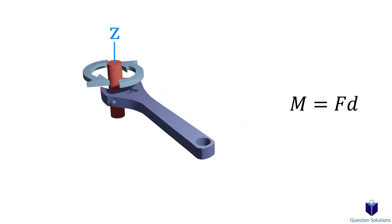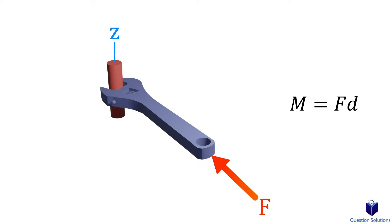If we apply our force straight along the handle, then no rotation would occur. This is called the line of action. Because the line of action of our force intersects the Z axis, it can't create a moment.